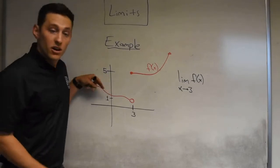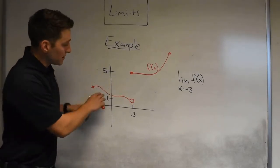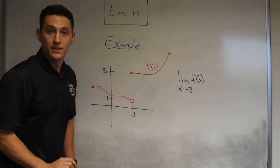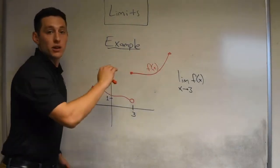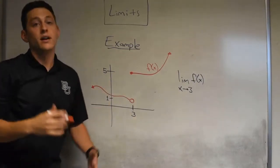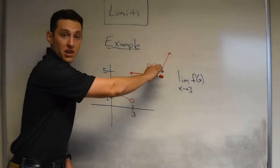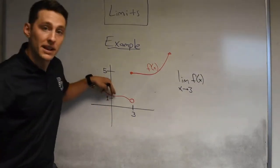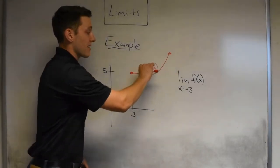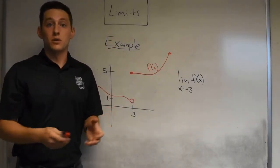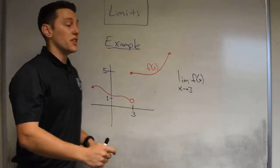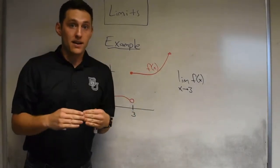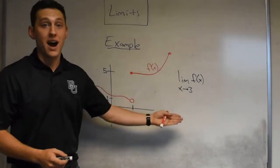If you notice, from the left hand side, all the points up to x equals 3 are telling me to fill in the dot at y equals 1. However, from the right hand side, all the points estimated from this side are telling me that when you get to x equals 3, your y value will be 5. So now we have an issue: the estimate from the left hand side does not line up with the estimate from the right hand side. Since we define this to be the common point of meetup — meaning the left hand side and the right hand side have to agree in order for us to fill in the dot — we actually say this limit does not exist.